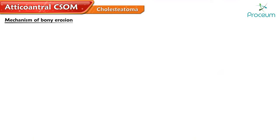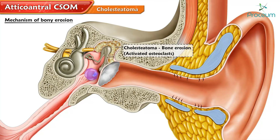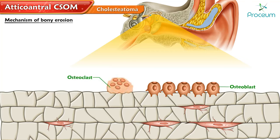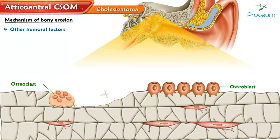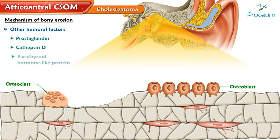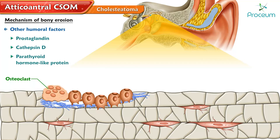Mechanism of Bony Erosion. Initially, it was thought that the physical pressure of cholesteatoma causes bony erosion. At the cellular level, it was noted that the chief factor in bony erosion is the activation of osteoclasts. The release of inflammatory mediators such as cytokines and interleukin-1-alpha from macrophages and epidermal keratinocytes plays an important role in osteoclast activation. Other humoral factors suggested are prostaglandin, cathepsin-D, and parathyroid hormone-like protein. In addition to bone destruction, new bone formation can occur in cholesteatoma, mostly seen in the attic and mastoid antrum.